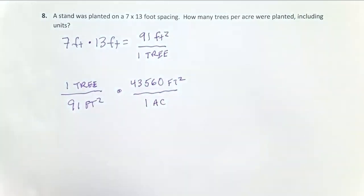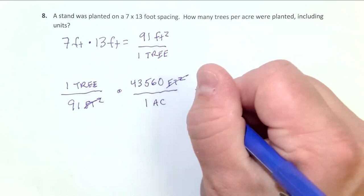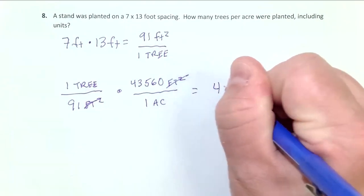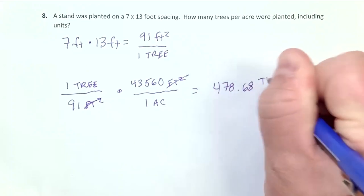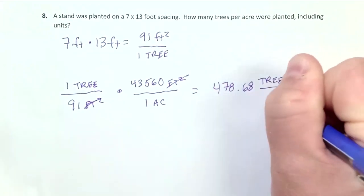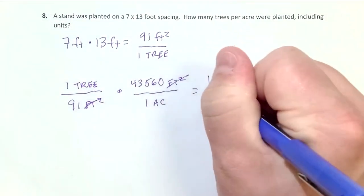And so I can see my units here, feet squared cancel out. And my units that I'm left with are going to be trees per acre, which in this case is going to be 478.68 trees per acre. So this is our correct answer.